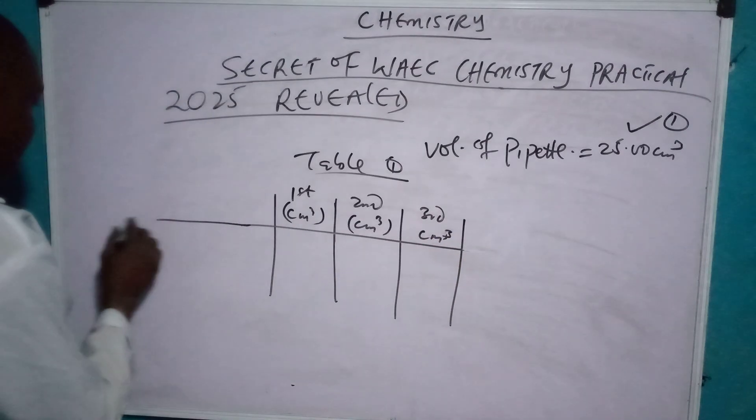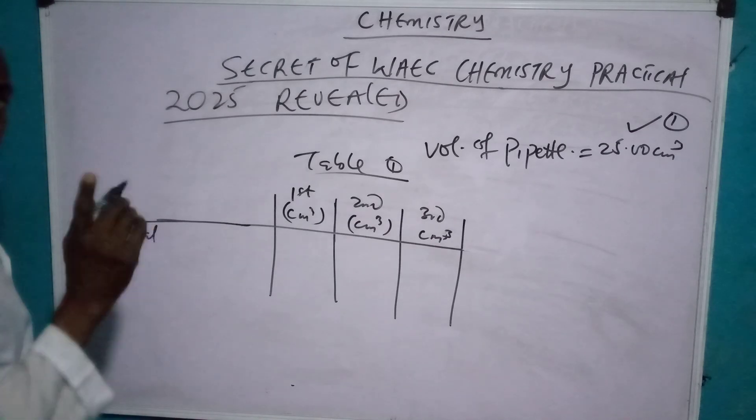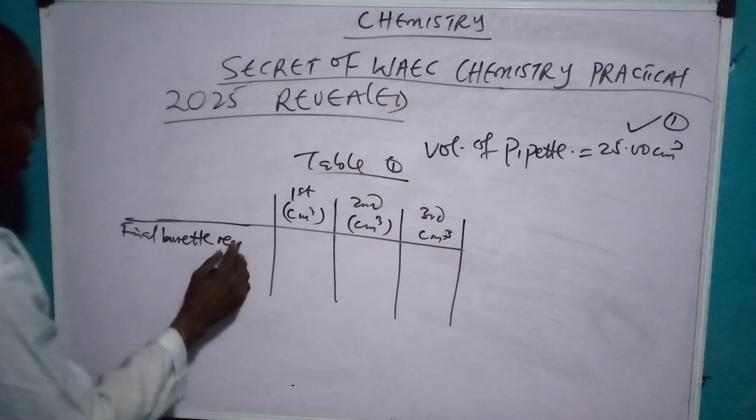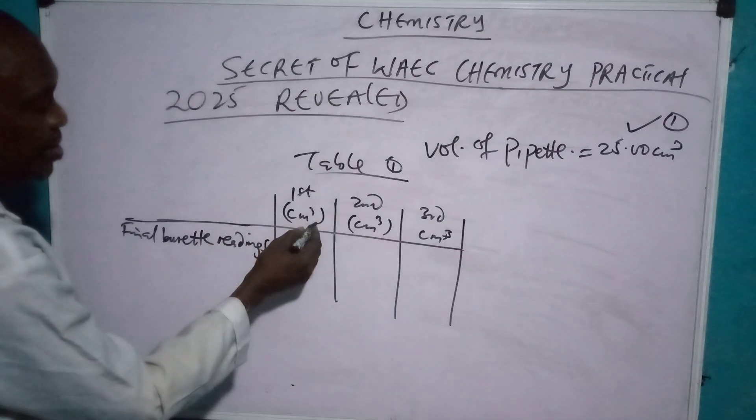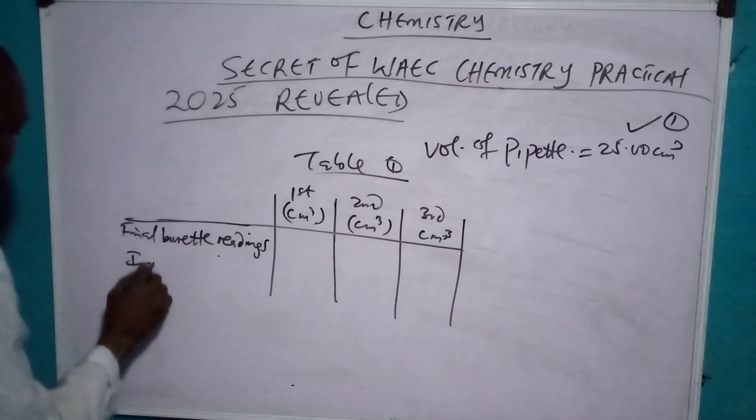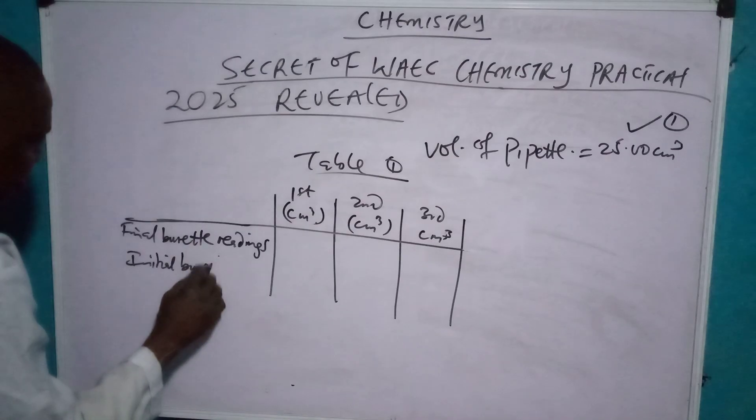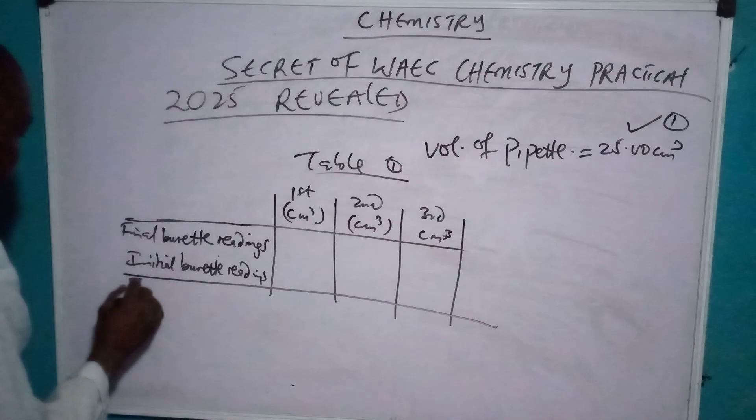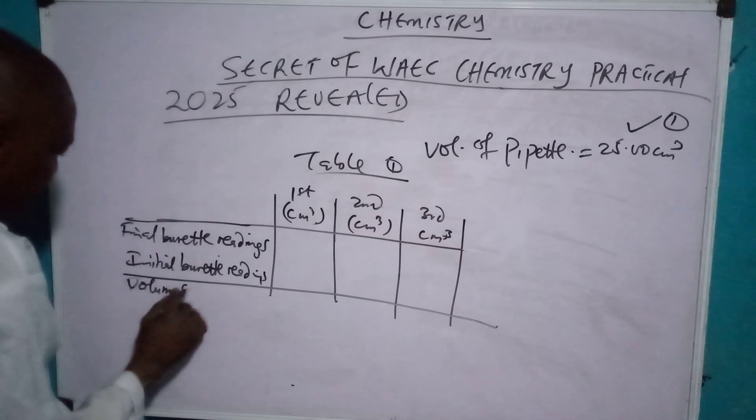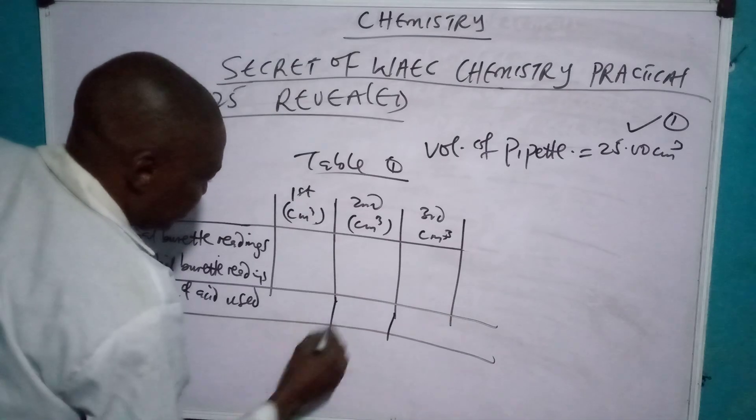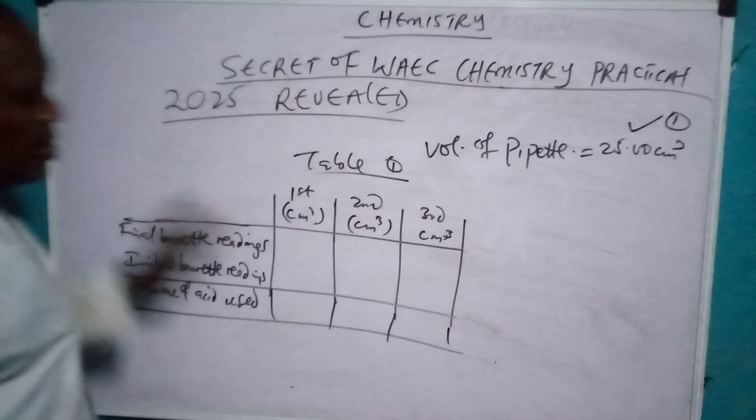You draw your table in this format. Here, write first reading in cm³, second cm³, third cm³. So these are the readings we are going to use. This is where you draw the table. Now, first of all, write here: final burette readings. I have already done cm³ units, so no need to write it. Initial burette readings. And you will underline it, write volume of acid used. Underline it again.